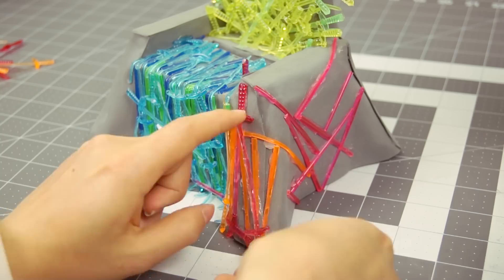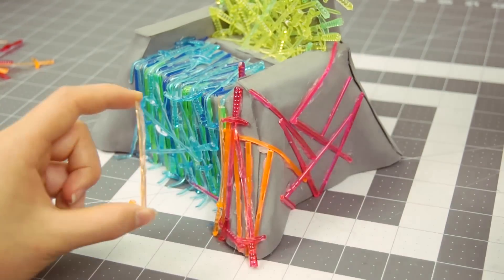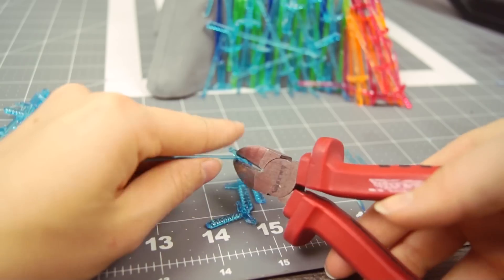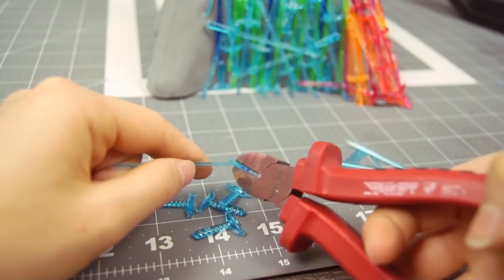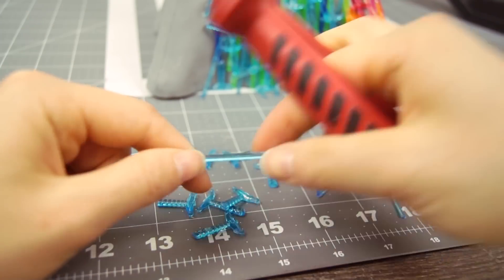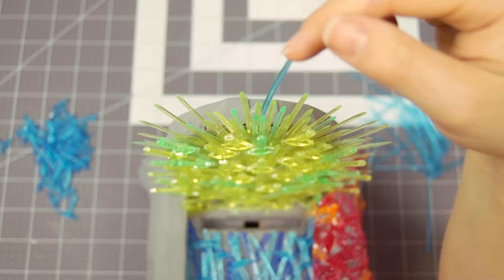It would have looked more chaotic with all the colors in one place, well at least to me. For the top crown of the throne I only needed the blades of the swords. I kept the handles as I need those later. Time to glue the blades around the edge.